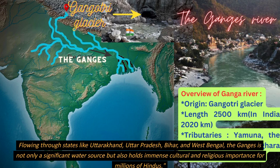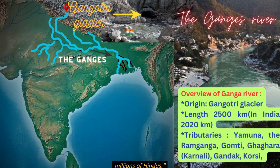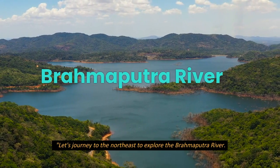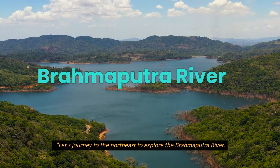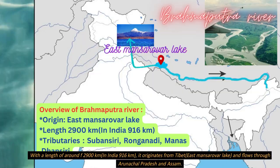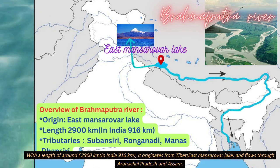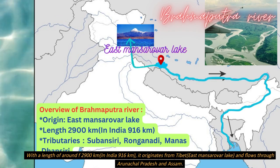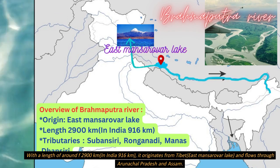The Ganges is not only a significant water source but also holds immense cultural and religious importance for millions of Hindus. After the Ganga, let's journey to the northeast to explore the Brahmaputra river, with a total length of around 2,900 kilometers, of which only 916 kilometers is within India.